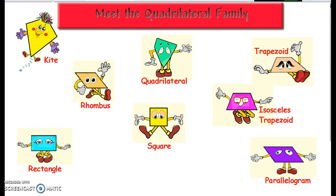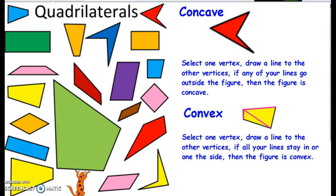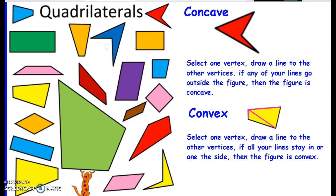And once a figure has more than three sides, it can be either concave or convex. What does that mean? Look at all these quadrilaterals. Some of them have little caves that we can hide in. That's what we mean by concave.